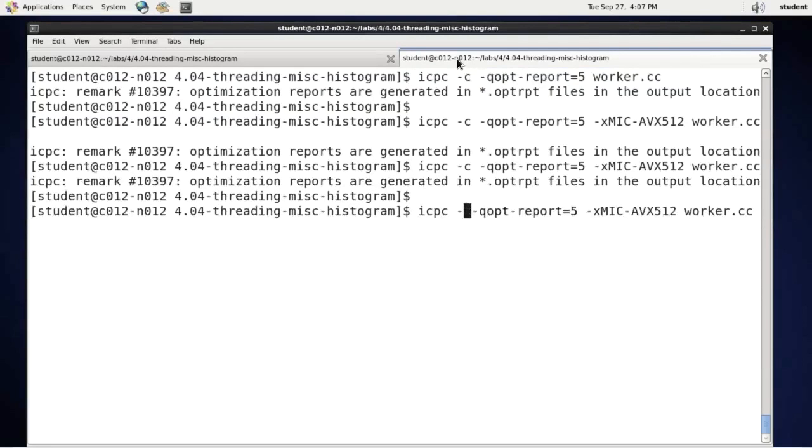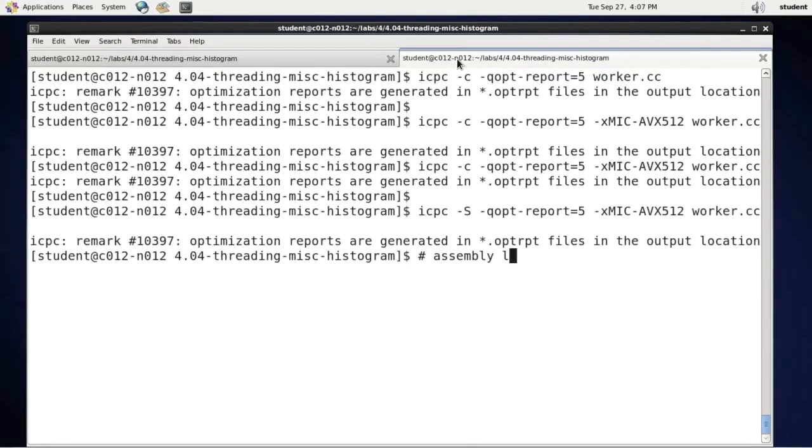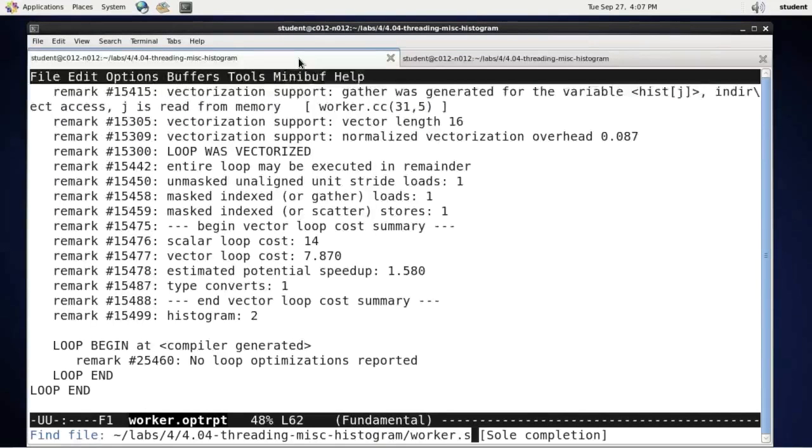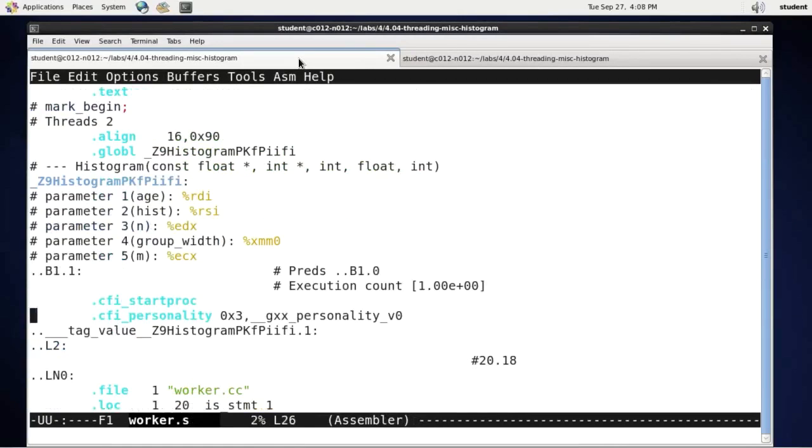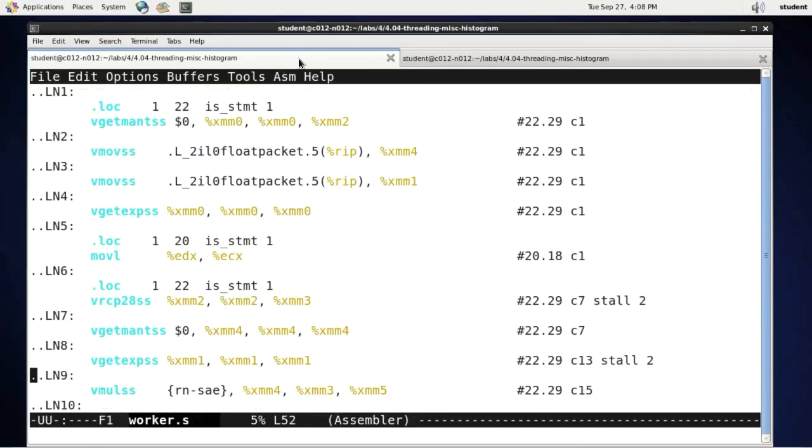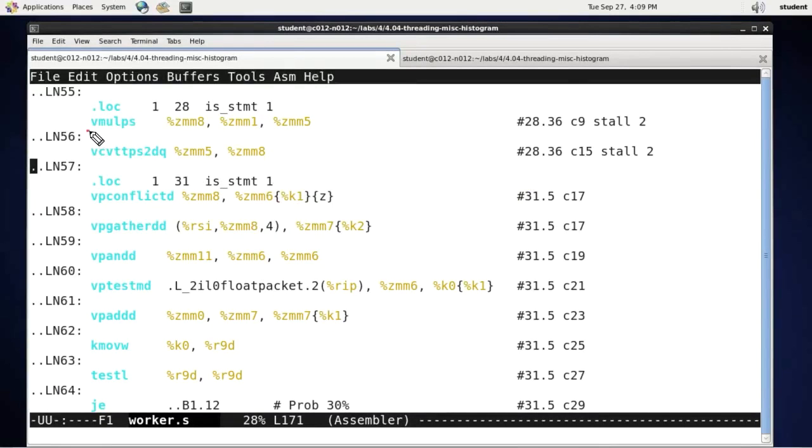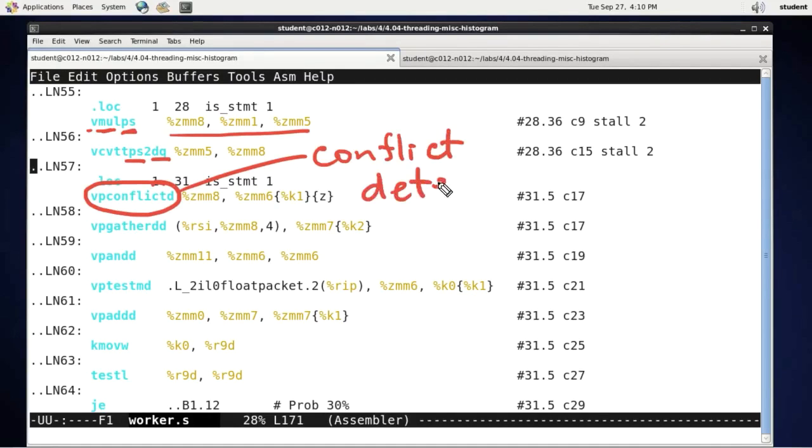We can see what exactly the compiler did to the code if we replace -c with -s. This produces assembly listing and it goes into file worker.s. It is curious studying this assembly. So this is the assembly. As I go down, I will eventually find the beginning of my loop. Here it is - here is a vector instruction that multiplies the previously loaded value of ages by the previously created vector with the reciprocal group width. This is an operation on packed single precision numbers. Then it converts the vector of packed double precision numbers into a vector of signed integers. And here is the crucial operation: conflict detection. This is the operation that allows this entire loop to vectorize.